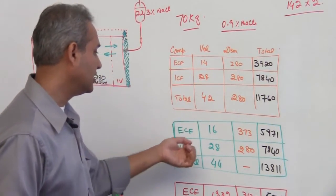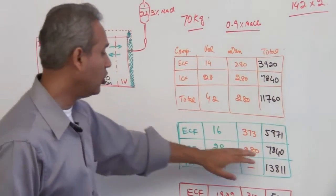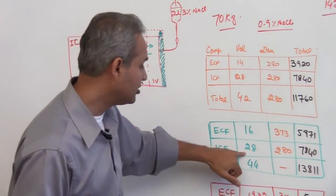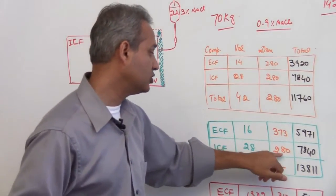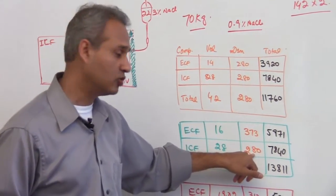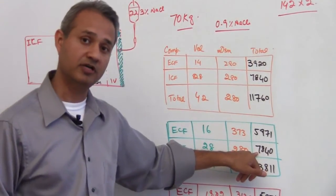Let's consider that all this fluid came in the extracellular compartment, all the sodium chloride also went into the extracellular compartment. Intracellular compartment stayed at 28 liters, 280 milliosmoles per liter, and total 7840 milliosmoles.